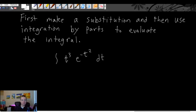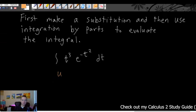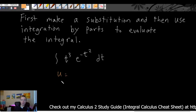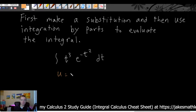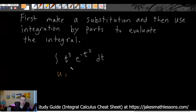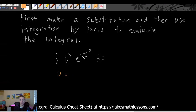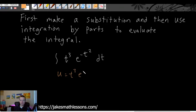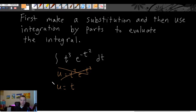We know we're going to make a substitution, so we'll start there. When doing U-substitution, the first thing you need to figure out is what you're going to call your u. You're never going to want to make u the entire thing, so we're definitely not going to say u equals t cubed times e to the negative t squared. You also never want to say u equals just the variable you're dealing with, because that's not going to get you anywhere. We can right off the bat eliminate those two choices.